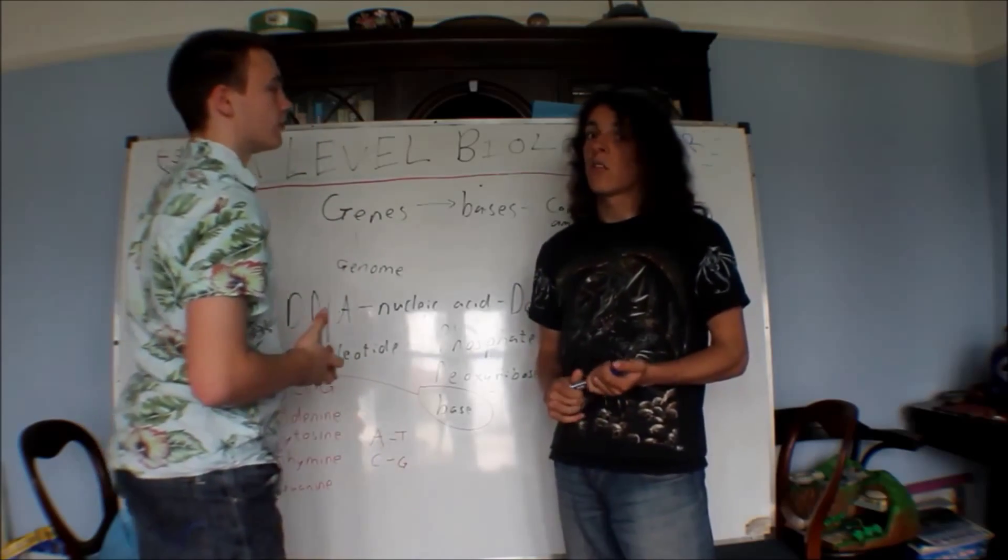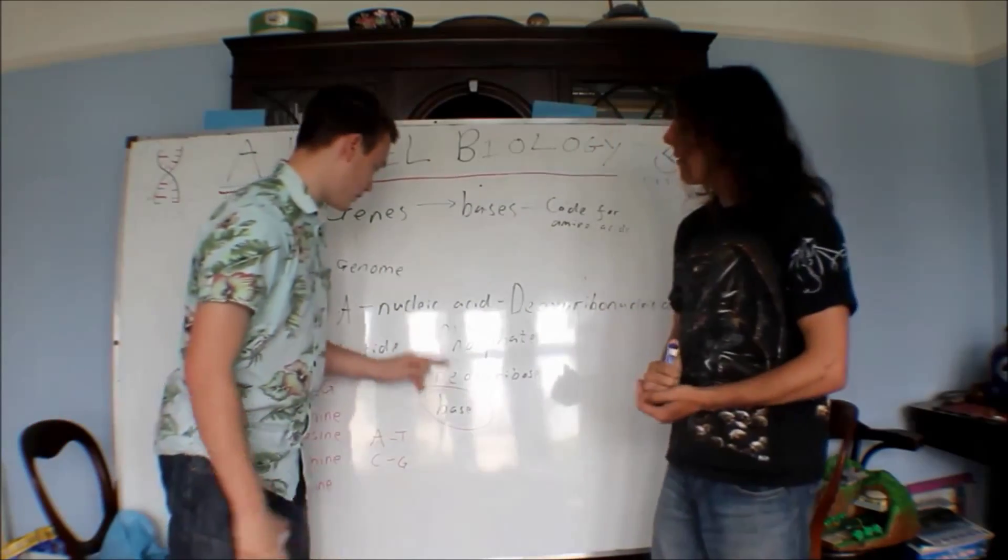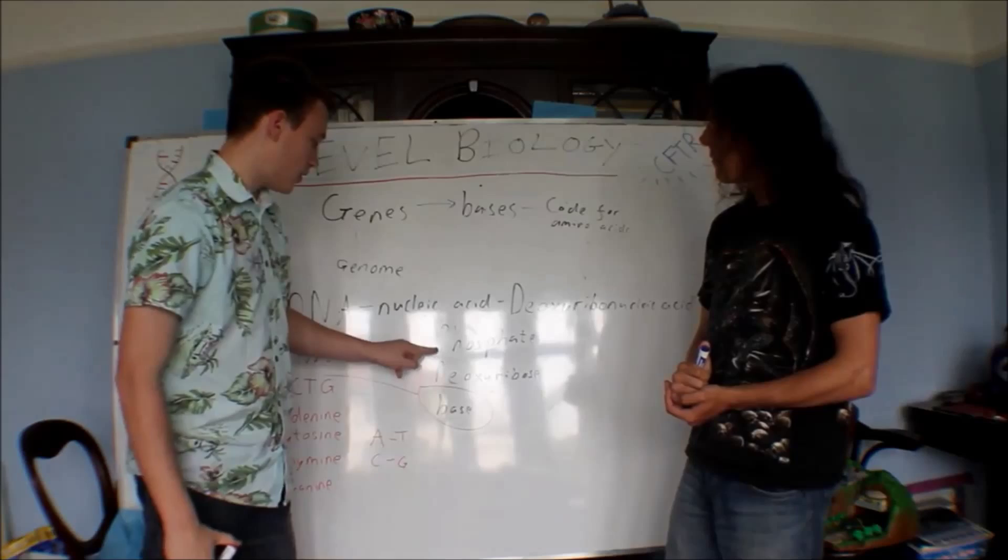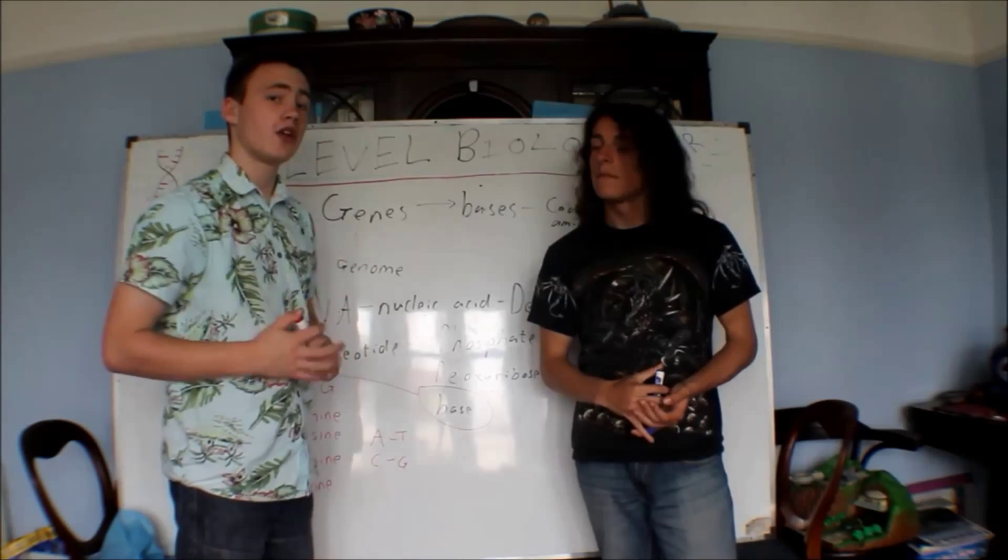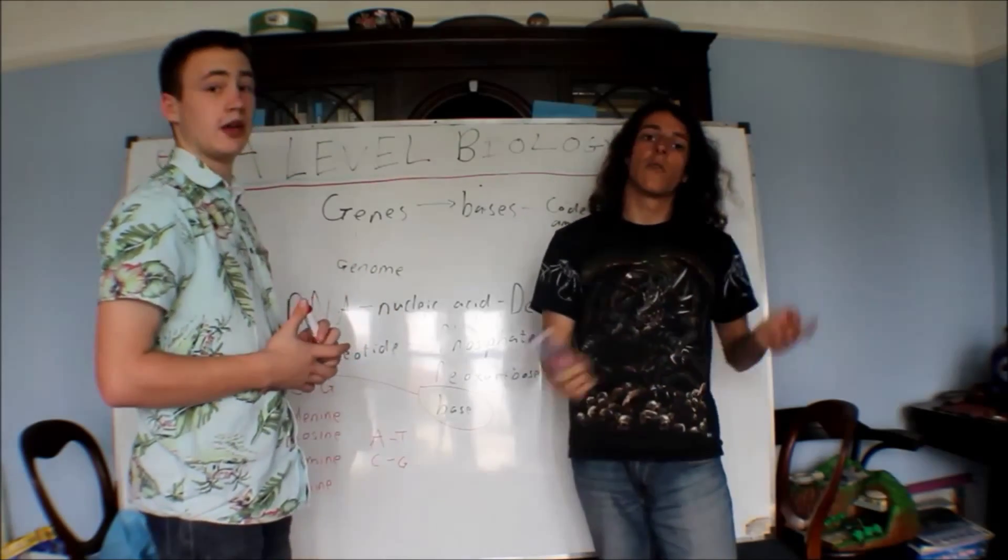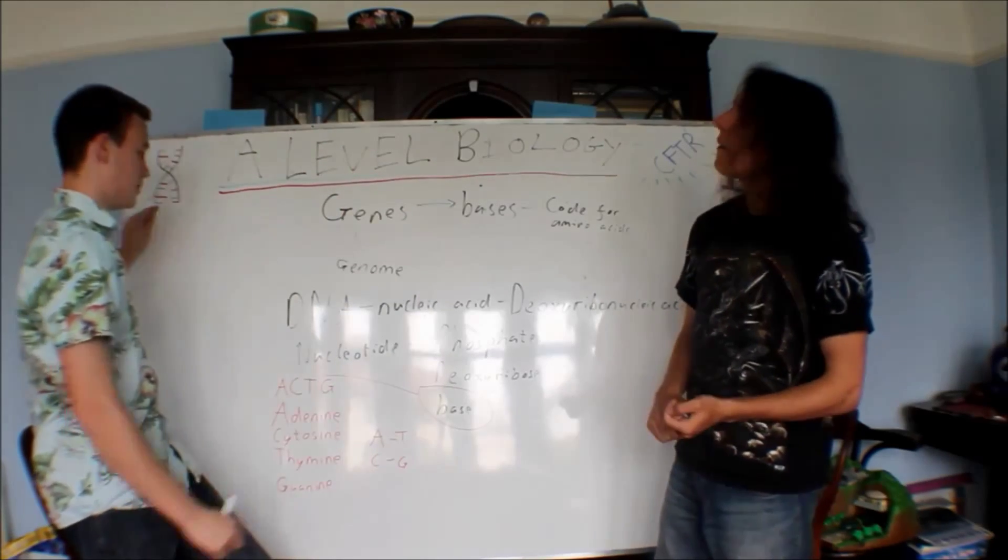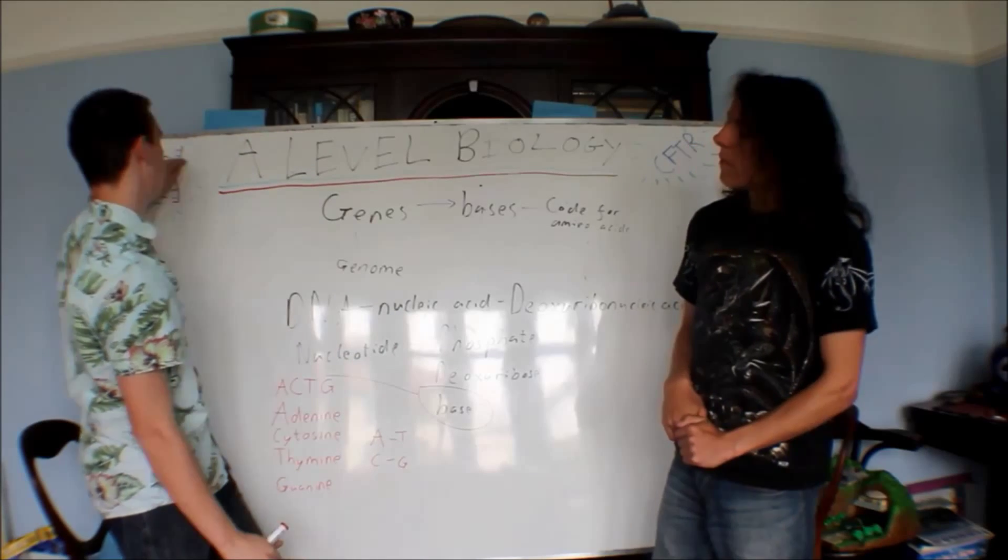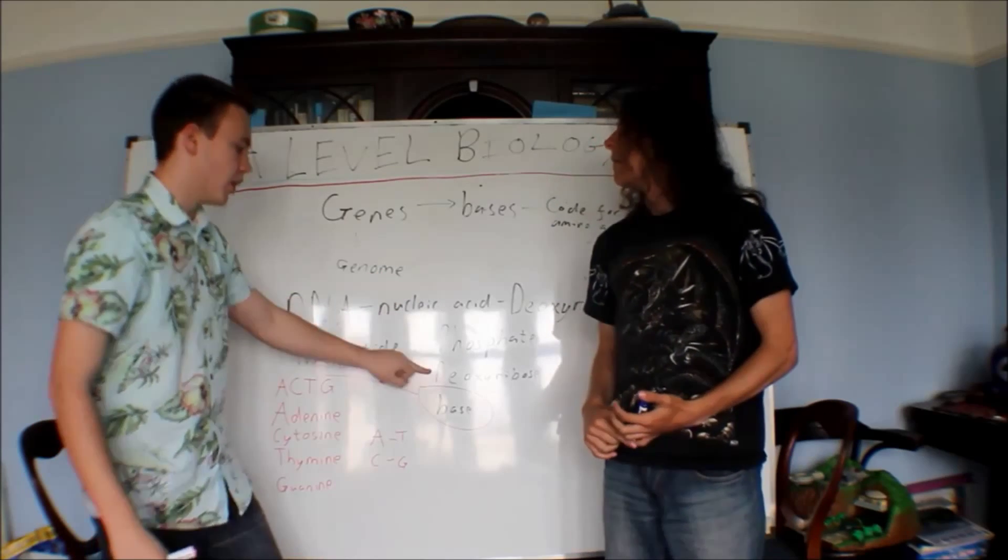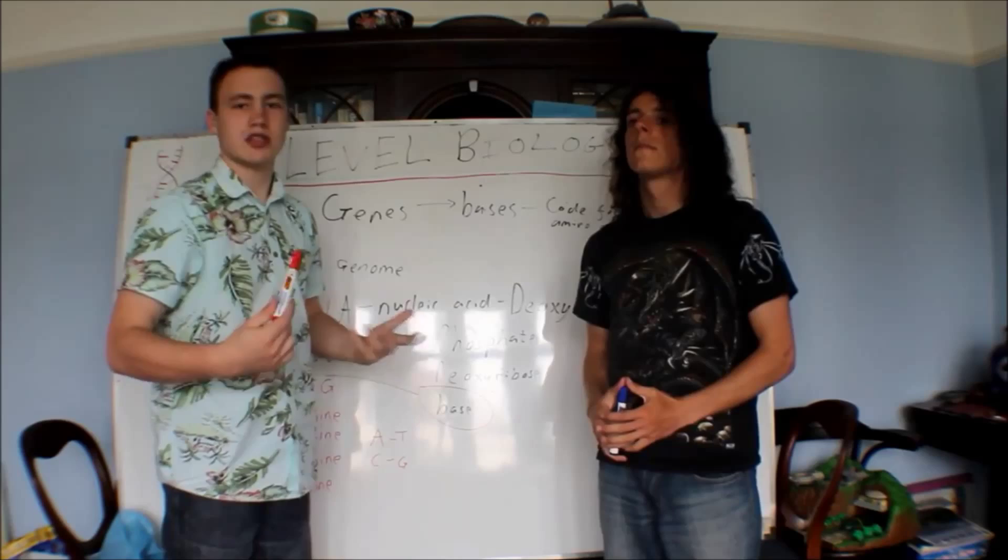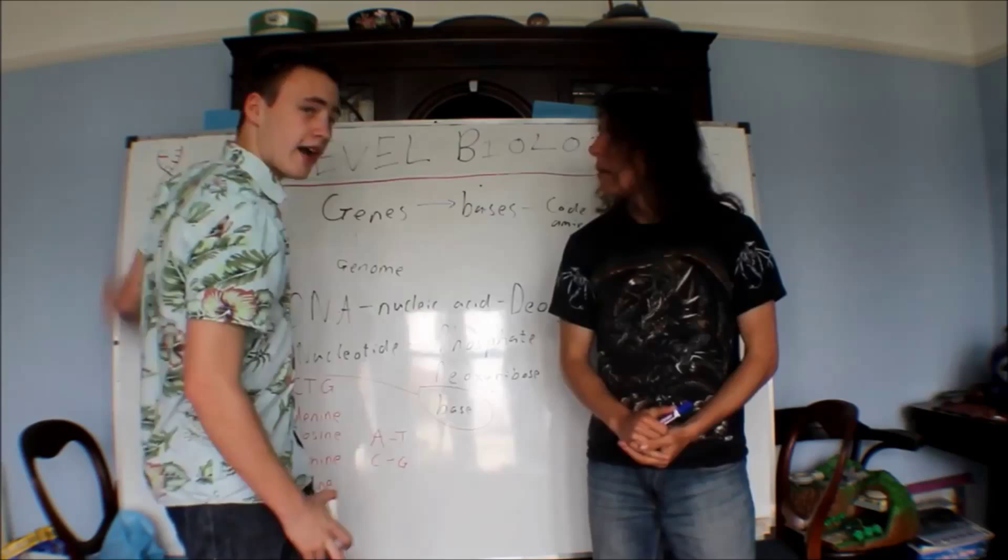As Triv said, A bonds to T, and C bonds to G. Now it becomes more important when we look at the actual structure of DNA. The phosphate bonds to the deoxyribose, the deoxyribose bonds to a base. They bond by condensation reactions, which release water. That bonds to another one of these to make up what's called a polynucleotide, because there's more than one nucleotide.